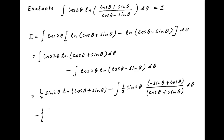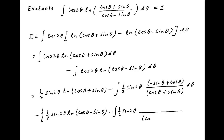For the second term, again integrating by parts, we have the integral of cos 2θ equal to half of sin 2θ, multiplied by ln(cos θ − sin θ), minus the integral of half of sin 2θ times 1/(cos θ − sin θ) with numerator (−sin θ − cos θ) dθ.